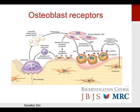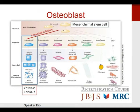Osteoblasts have many receptors and control much of bone metabolism. Parathyroid hormone stimulates osteoclasts when present continuously, but pulsed parathyroid hormone actually stimulates osteoblasts. Teriparatide, or Forteo, is a synthetic parathyroid hormone used to stimulate osteoblasts in osteoporosis. Other receptors include vitamin D, prostaglandins, and estrogen. The lack of estrogen in the postmenopausal state can cause postmenopausal osteoporosis.